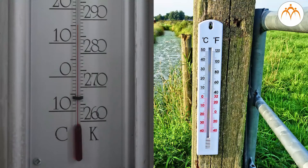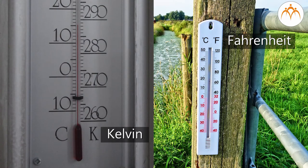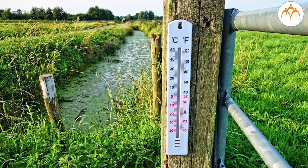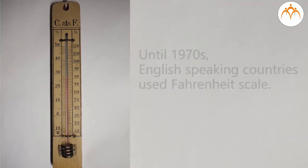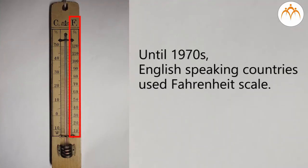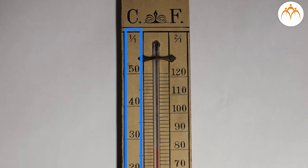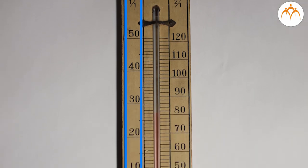There are other scales like Kelvin and Fahrenheit which are also used in industry. The Fahrenheit temperature scale is based on 32 for the freezing point of water and 212 for the boiling point of water, with the interval between the two divided into 180 parts. Until the 1970s, Fahrenheit was in general common use in English-speaking countries, while Celsius was employed in most other countries and for scientific purposes worldwide.